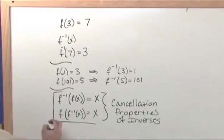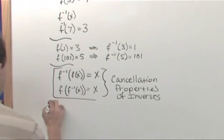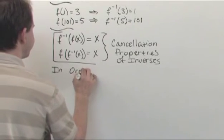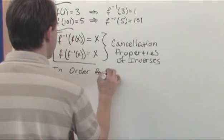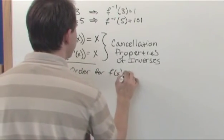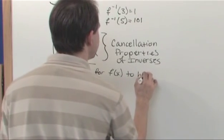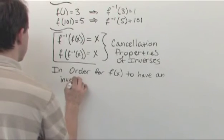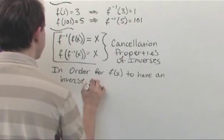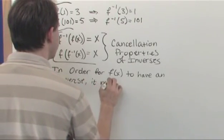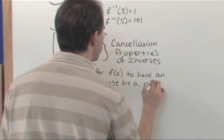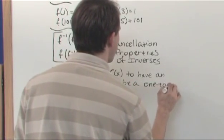Okay, the other thing I want to mention is in order for a function to have an inverse, I'm going to go ahead and write this down. In order for f of x to have an inverse, it must be a one-to-one function.